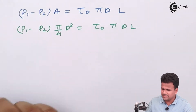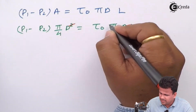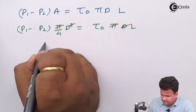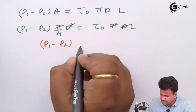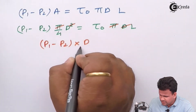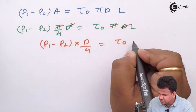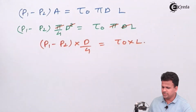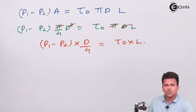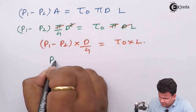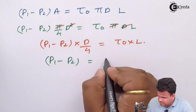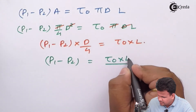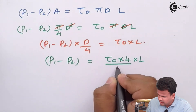Substituting the area A = (π/4)D², we get (P1 − P2) × (π/4)D² = τ₀ × π × D × L. Cancelling π and one D from both sides gives (P1 − P2) × D/4 = τ₀ × L. Therefore, P1 − P2 = 4τ₀L/D.